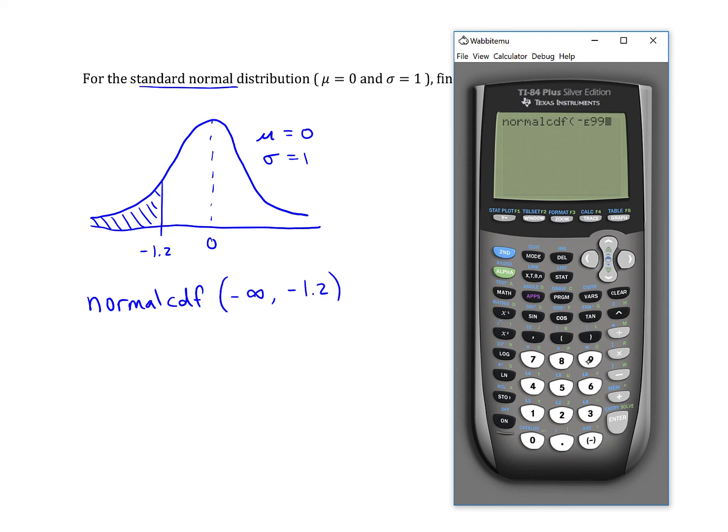Then 99, which is extremely small. It's negative 1 times 10 to the 99th power. And negative 1.2 is my upper bound. And I get 0.1151.